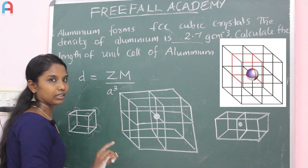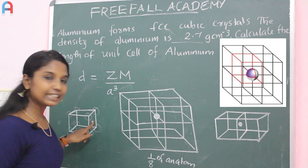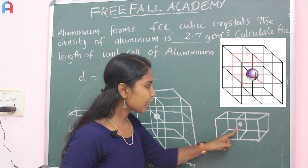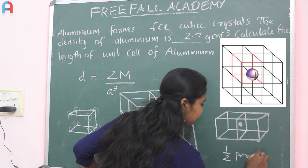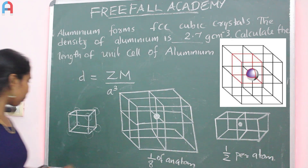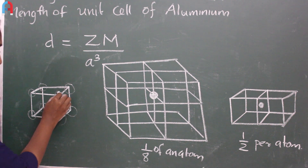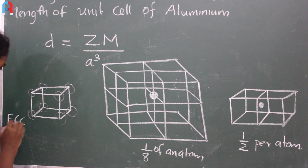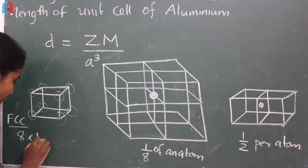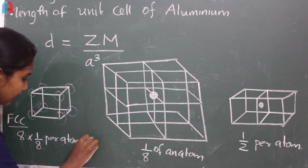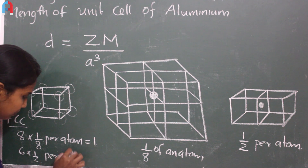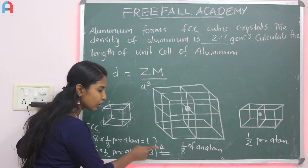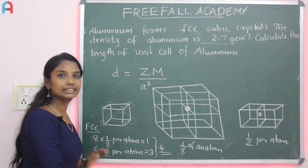Each corner contributes 1/8 of an atom. There are 8 corners, giving 8 × 1/8 = 1. Each face atom contributes 1/2. There are 6 faces, so 6 × 1/2 = 3. Total atoms: 3 plus 1 equals 4 atoms. So the FCC structure has Z = 4 atoms per unit cell.